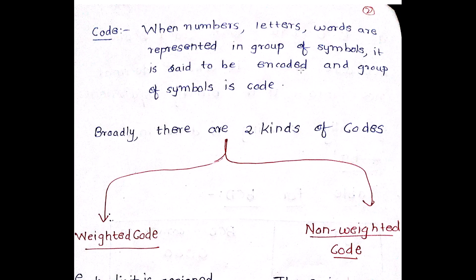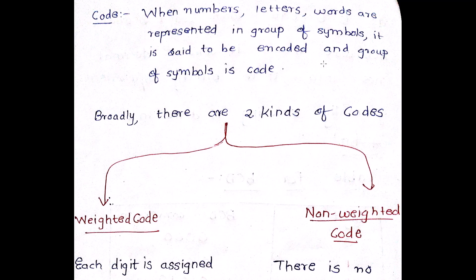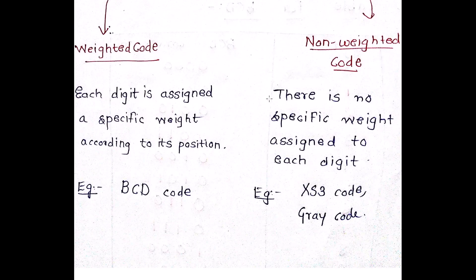Before beginning with codes, you should understand what a code is. When numbers, letters, or words are represented in the form of symbols, it is said to be encoded, and a group of symbols is called a code. There are different kinds of codes — the BCD code, XS3 code, and Gray code — in all of which numbers, letters, and words are encoded in the form of symbols.